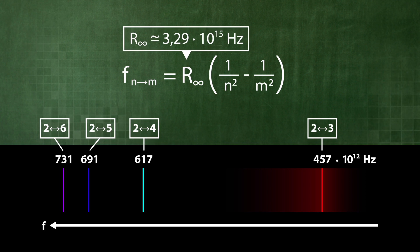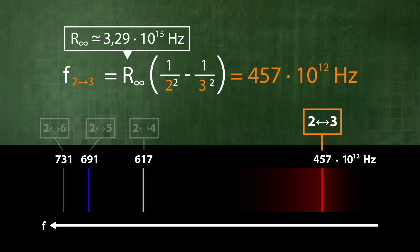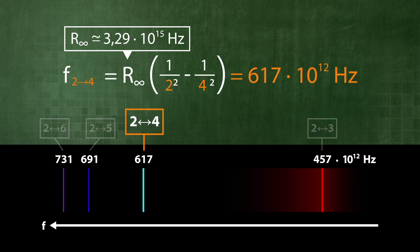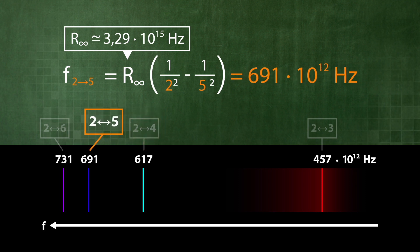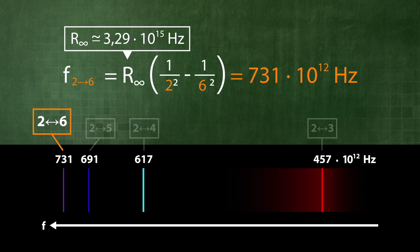Using the Rydberg constant, we can obtain the following numbers: 457 times 10 to the power of 12, 617 times 10 to the power of 12, 691 times 10 to the power of 12, and 731 times 10 to the power of 12.